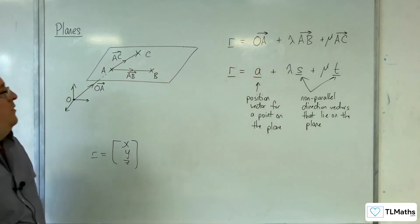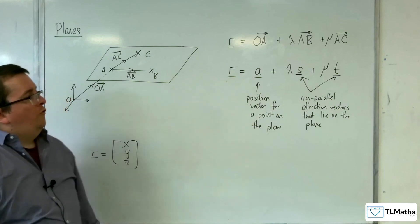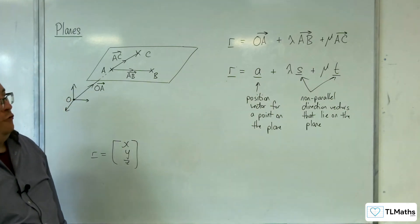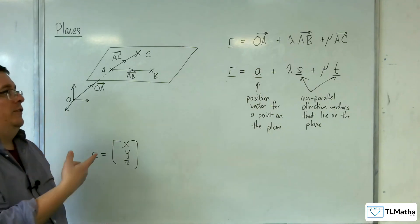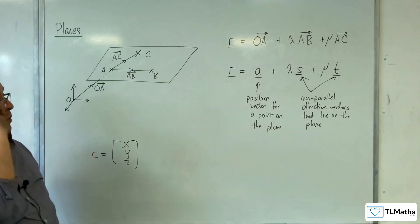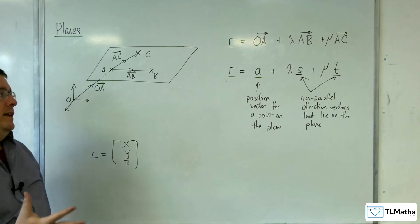So that is the form for a vector equation for a plane. Now you haven't met that before. You've met the Cartesian equation for a plane. So what we'll do is we'll take a look at an example of being able to find the vector equation of a plane.